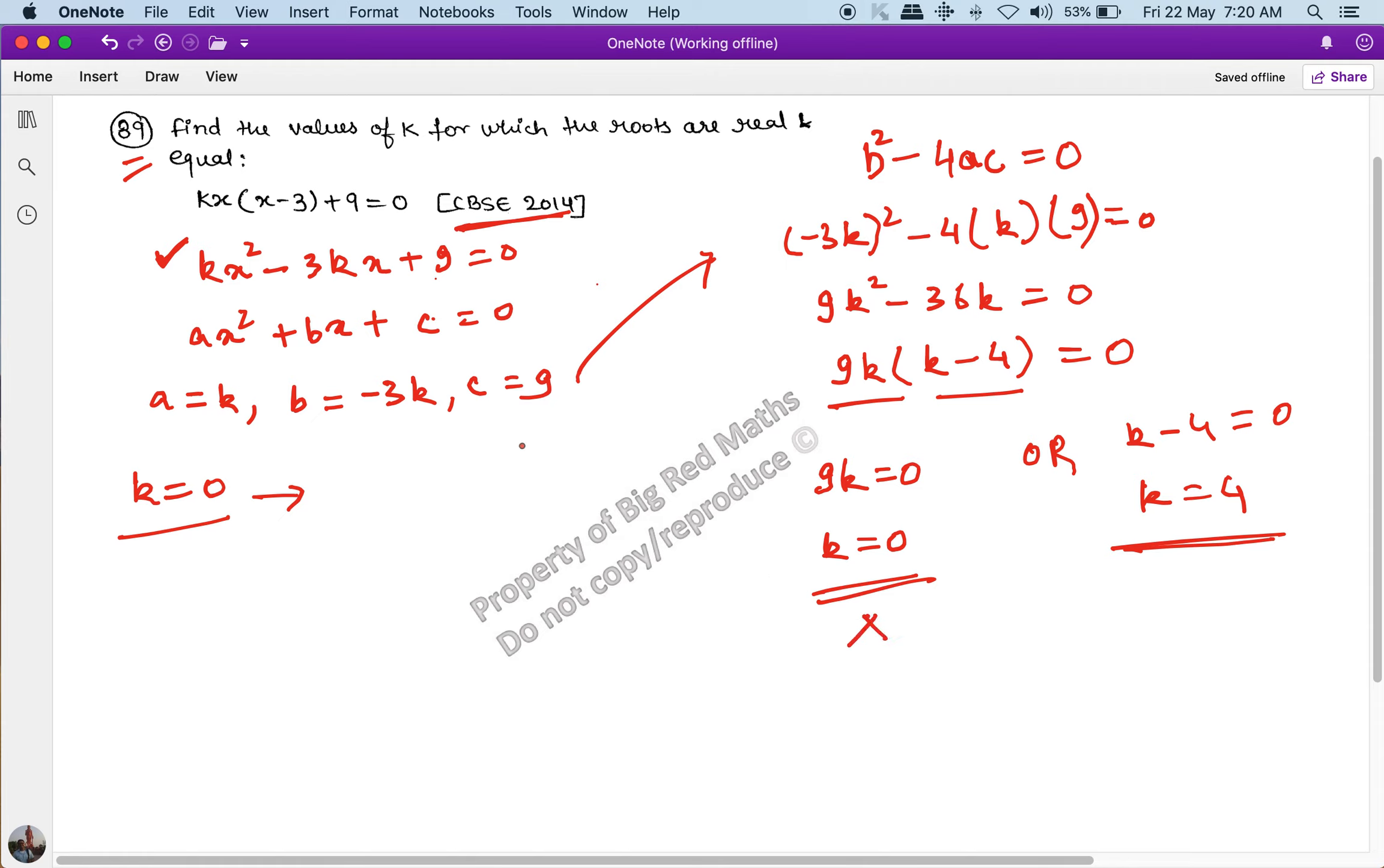So k equal to 0 cannot be possible because the condition for quadratic equation is that a should not be equal to 0. If a is 0, then its degree will not remain 2. Therefore, k equal to 4 is our answer. I hope you found the solution useful.